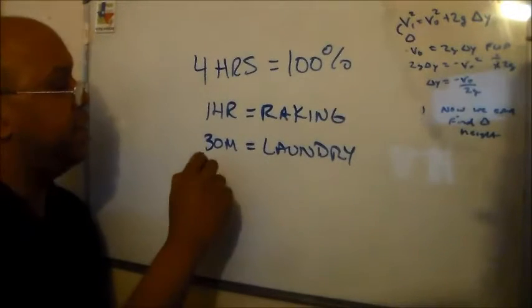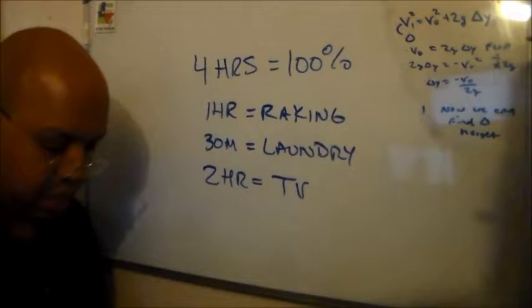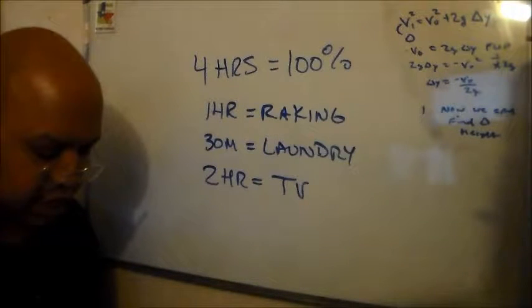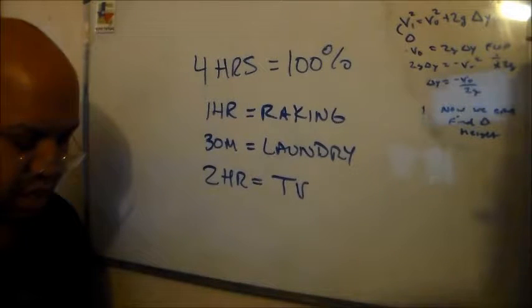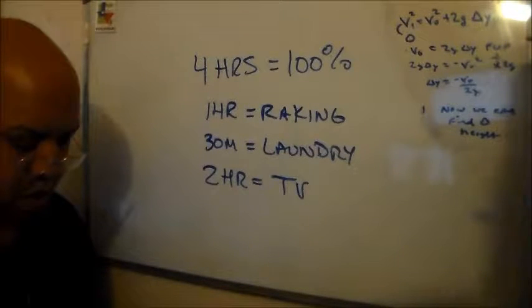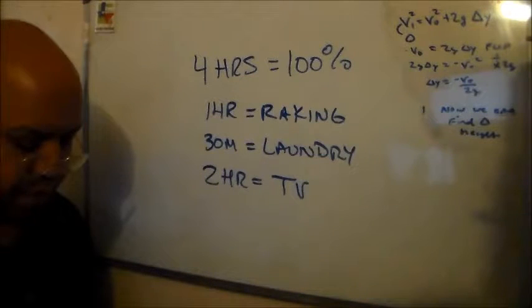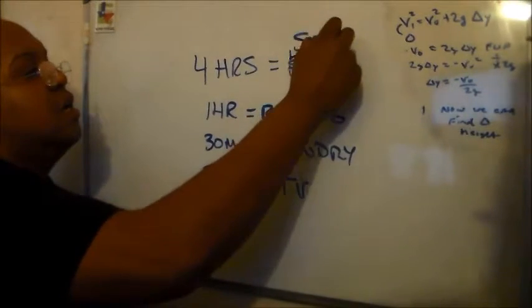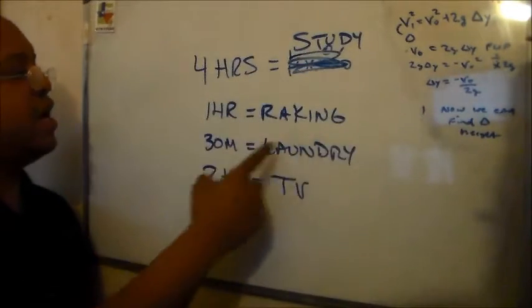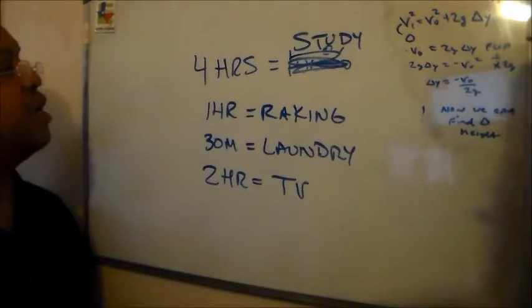And two hours watching TV. I'll just put TV. What is the percentage of his time spent studying? Alright, so four hours studying. Jonathan spent four hours studying, one hour raking leaves. Okay, so this is not the 100%, I'm sorry. It was studying. Alright, four hours of study, one hour raking leaves, thirty minutes doing laundry, two hours watching TV.